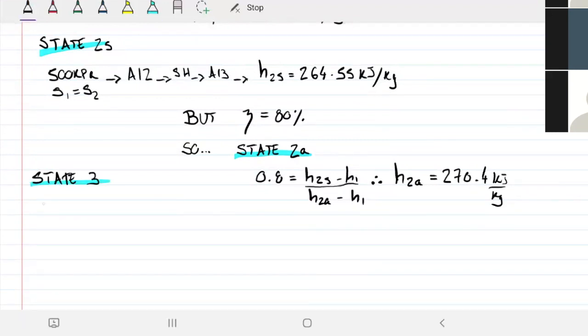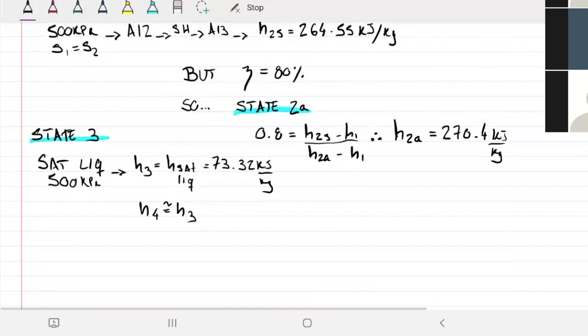State three. We know this guy is a saturated liquid and we also know the pressure of three is 500 kPa. That's easy, just look at the saturated liquid enthalpy and h3 = 73.32 kJ/kg. State four, same as h2a... wait, h4, we can go on to state five, it's going to be exactly the same.